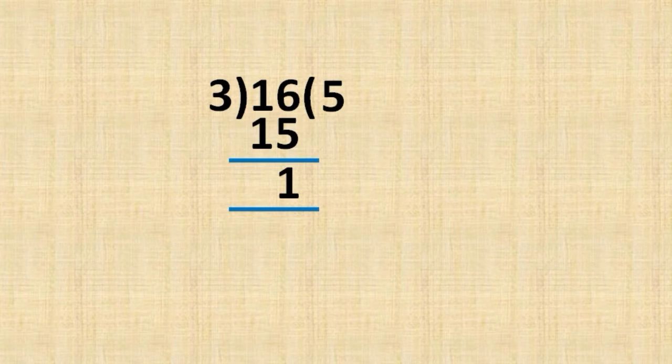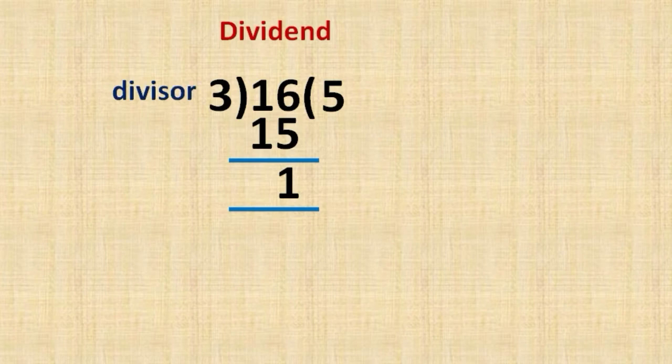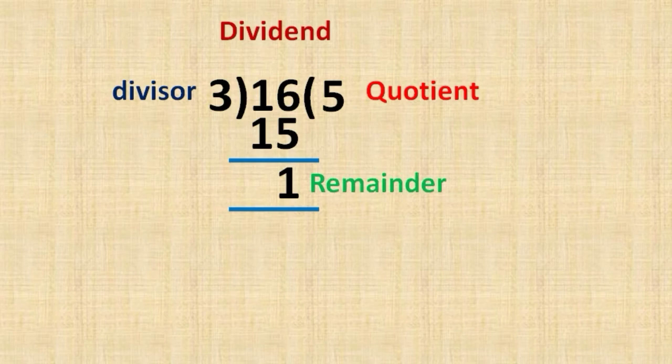What is division? We have to observe and name the parts. 16, 3, 5, and 1 have specific names. 16 is the dividend, 3 is the divisor, 5 is the quotient, and 1 is the remainder. This is division.